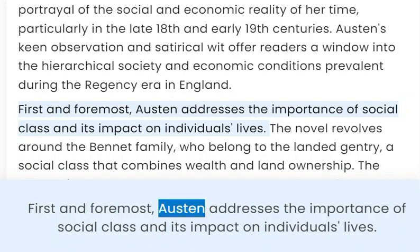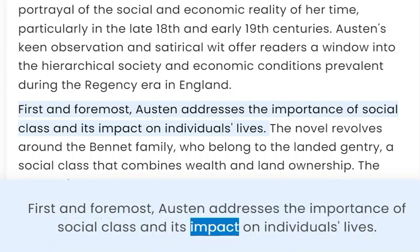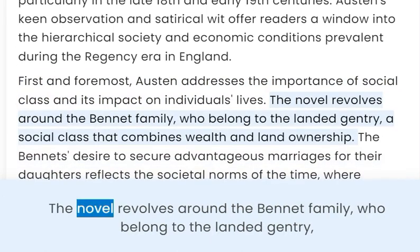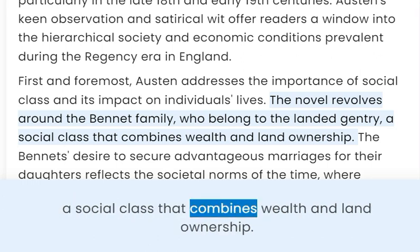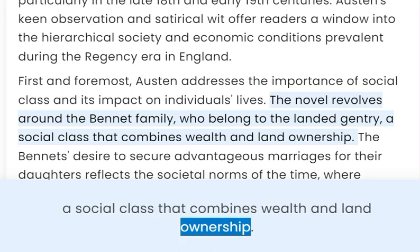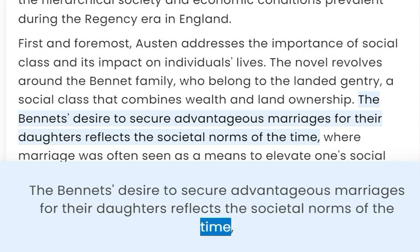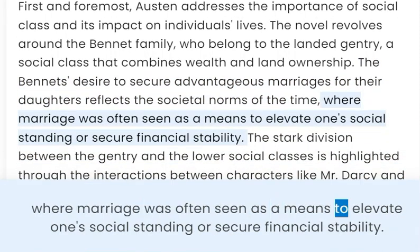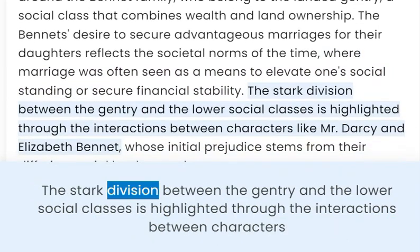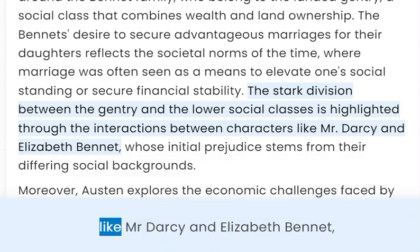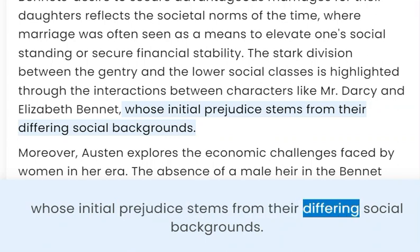First and foremost, Austen addresses the importance of social class and its impact on individuals' lives. The novel revolves around the Bennet family, who belong to the landed gentry, a social class that combines wealth and land ownership. The Bennets' desire to secure advantageous marriages for their daughters reflects the societal norms of the time, where marriage was often seen as a means to elevate one's social standing or secure financial stability. The stark division between the gentry and the lower social classes is highlighted through the interactions between characters like Mr. Darcy and Elizabeth Bennet, whose initial prejudice stems from their differing social backgrounds.